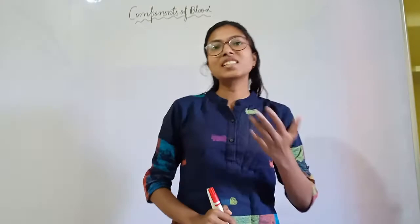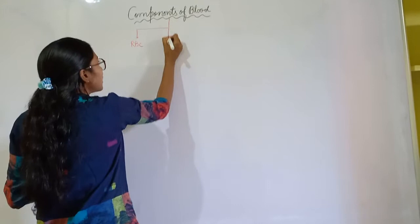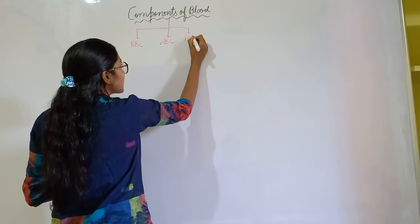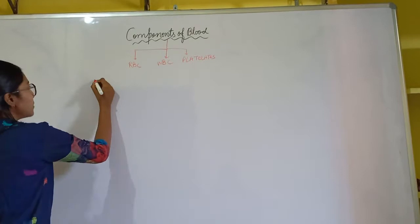In today's class we will study about the components of blood. We have already covered in the previous class that there are three types of components of blood: RBC, WBC, and blood platelets. We have discussed about RBCs; now today we will discuss about WBCs.